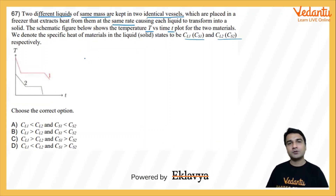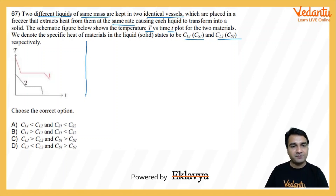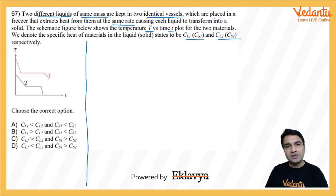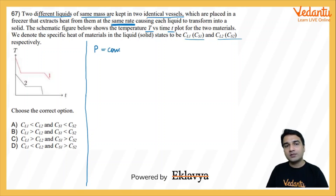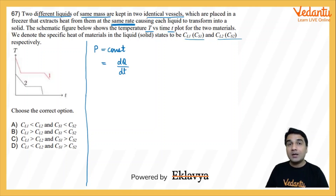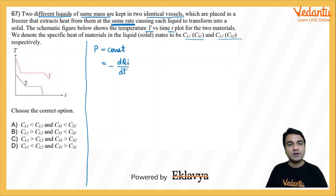The freezer is extracting energy from the two vessels or the two liquids. This means the power extracted by the freezer is constant in both cases. Power is the rate of energy provided or energy extracted from the system. If we are extracting energy, this rate is negative because as time increases, the Q value will decrease.